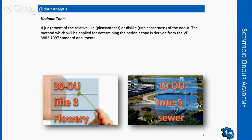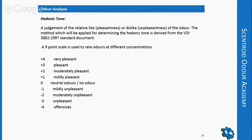Hedonic tone is a newer characteristic that I really like and I believe will be more widely used. It started in Germany in the VDI 3882 standard, and will go into the European, American, and Canadian standards soon. It goes a step above odor intensity by using a scale with both positive and negative numbers — positive numbers define pleasant odors, and negative numbers define unpleasant ones.